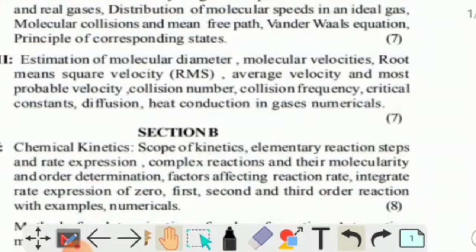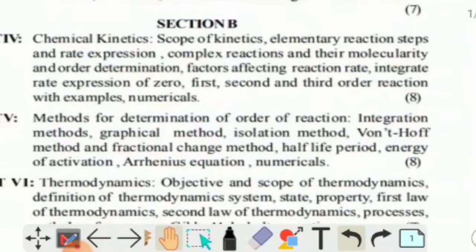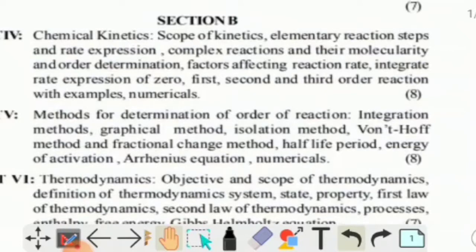Section B, Unit 4 is Chemical Kinetics: scope of kinetics, elementary interaction steps and rate expression, complex reactions and their molecularity and order determination, factors affecting reaction rates, integrated rate expressions of zero, first, second, and third order reactions with examples and numericals, and methods of determination of order of reaction.